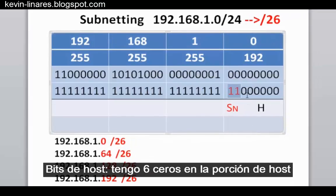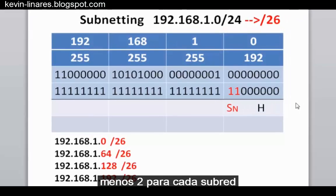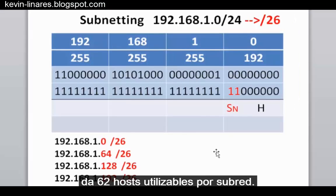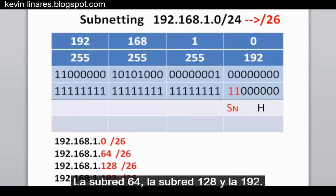For host bits, we have six zeros in the host portion of the address, and two to the sixth power is 64, minus two for each subnet makes 62 usable hosts per subnet. The four subnetworks created are the 192.168.1.0 subnet, the 64 subnet, the 128 subnet, and the 192 subnet.